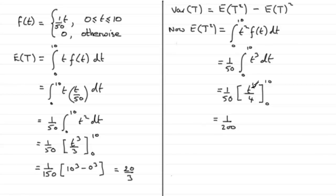So what we've got now is 1/200, if we just times the 50 with the 4. So 1/200, then we've got 10 to the power 4 minus effectively 0 to the power 4, which is simply 0. 10 to the power 4 is 10,000 divided by 200, which gives us exactly 50.